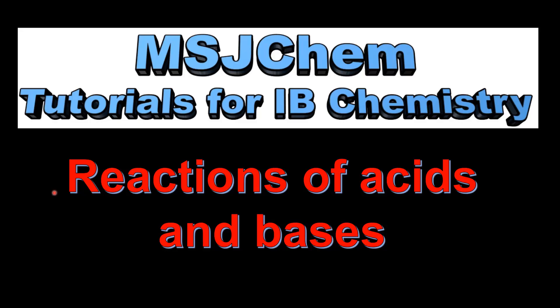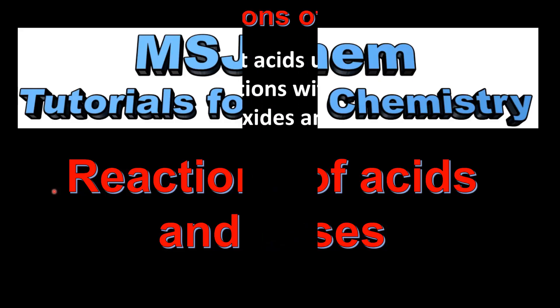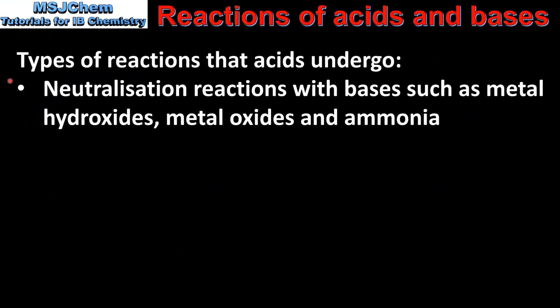This is MSJChem. In this video I'll be looking at the reactions of acids and bases. We'll start by looking at the types of reactions that acids undergo. First we have neutralization reactions with bases such as metal hydroxides, metal oxides and ammonia.